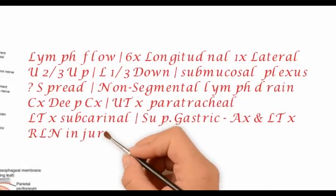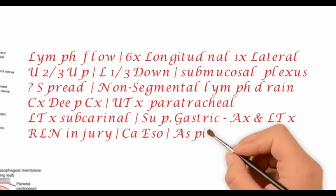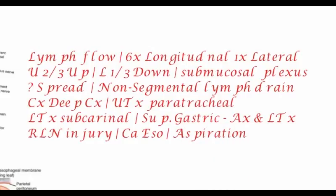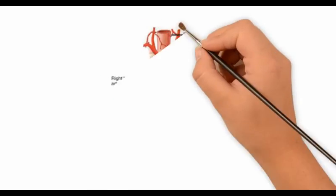The erratic spread of carcinoma esophagus is due to non-segmental lymphatic drainage. The cervical esophagus drains mainly into the deep cervical lymph nodes, the upper thoracic esophagus drains into the paratracheal lymph nodes, the lower thoracic esophagus drains into the subcarinal lymph nodes, and the superior gastric lymph nodes receive lymph from both the abdominal and lower thoracic regions. Recurrent laryngeal nerve injury can occur in carcinoma esophagus when there is spread into the lymph nodes, predisposing the patient to aspiration.